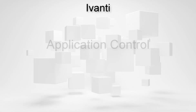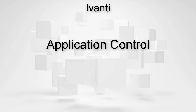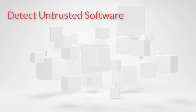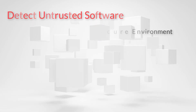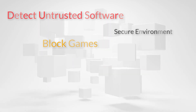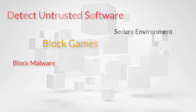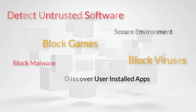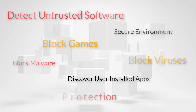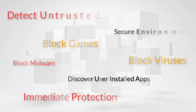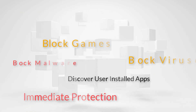Welcome to the Cervantes video where we'll take a look at how application control trusted ownership can help to simplify your whitelisting needs and is the first step in blocking untrusted software, which will make your organisation more secure. Straight out of the box, application control can detect user-introduced software such as games and unlicensed products, as well as inadvertently introduced malware and viruses, which can all be immediately blocked. This allows you to discover all the software your users have been using without your IT department's knowledge or consent.